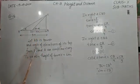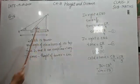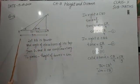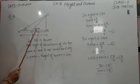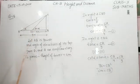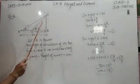AB is a tower and the angle of elevations of its top from D and A are complementary. That's why we take this angle as alpha and this as 90 minus alpha. Now we have to prove that the height of this tower, that is CB, is 6 meters.